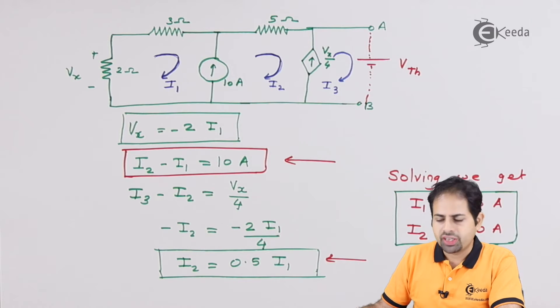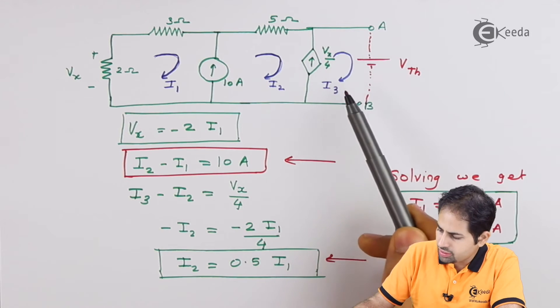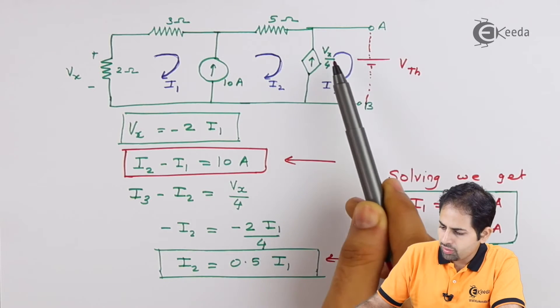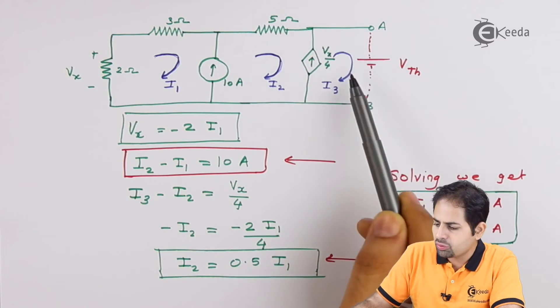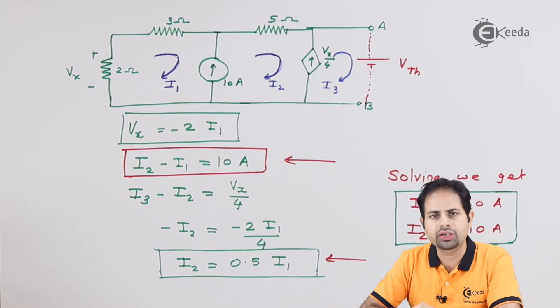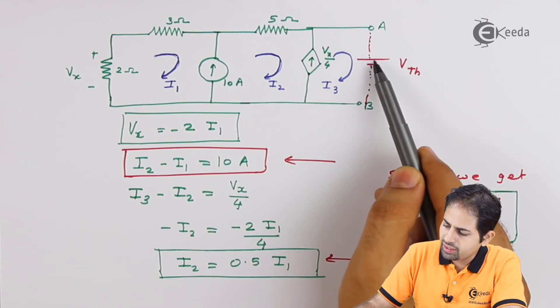Now we will go for Vth loop, so we have got this value of I2, I3 is already 0. Now if you apply KVL to this third loop, suppose I apply KVL in clockwise direction, mesh analysis I2, then I will have minus of Vth.